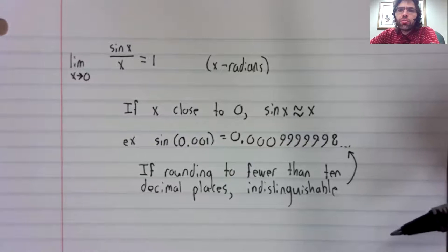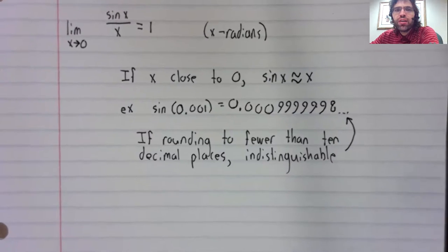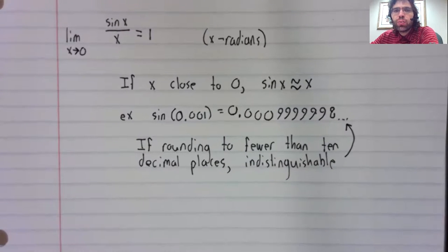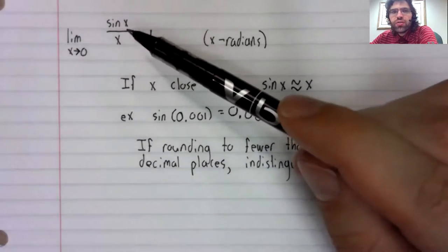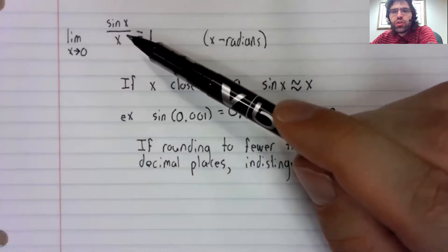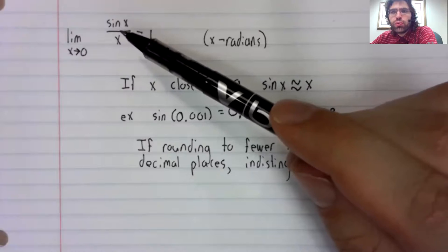If you're rounding to fewer than 10 decimal places, they're indistinguishable. So this limit is frequently used as an approximation tool.